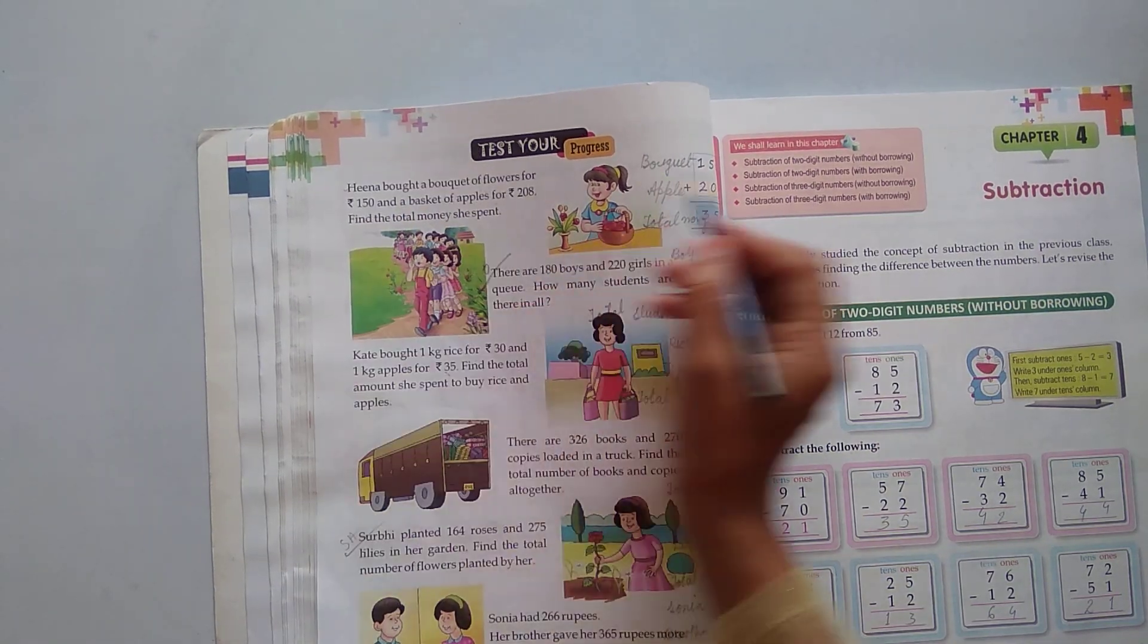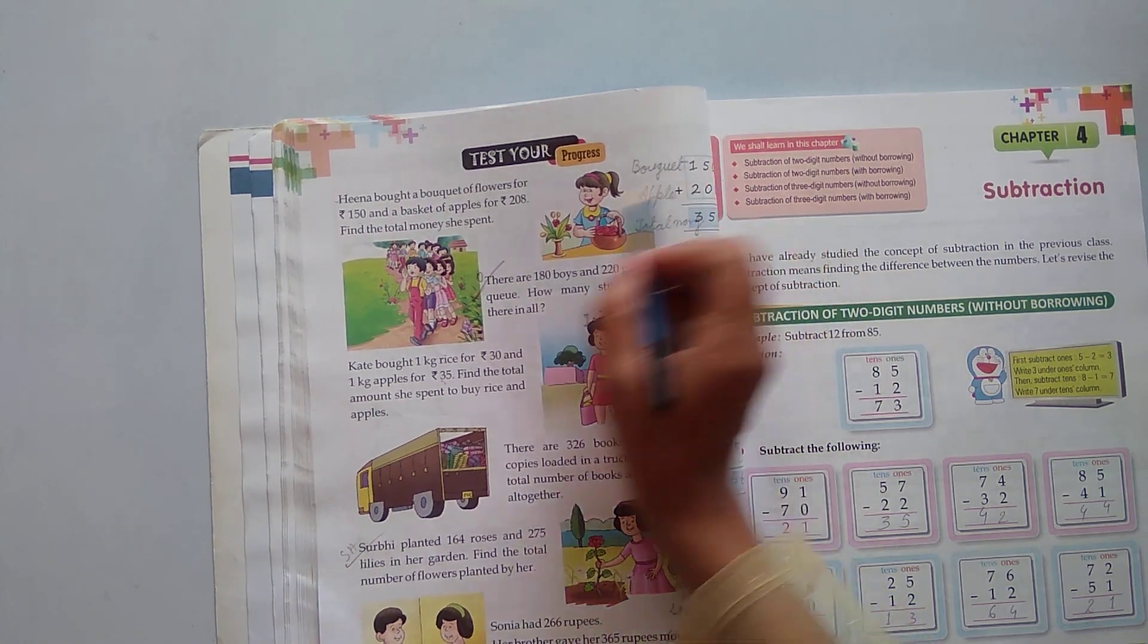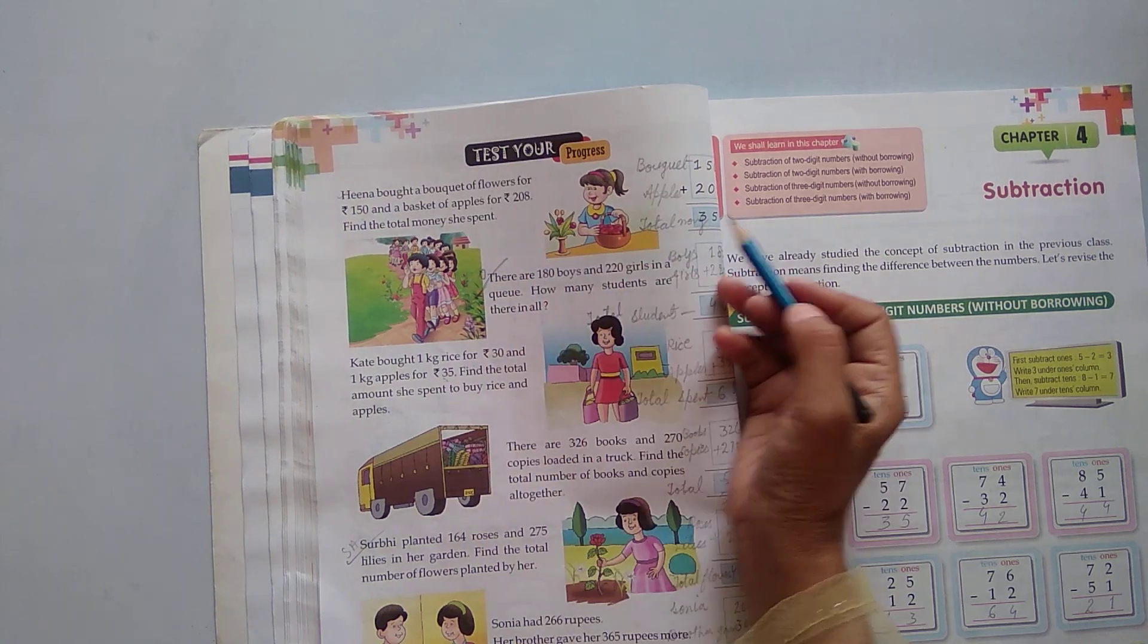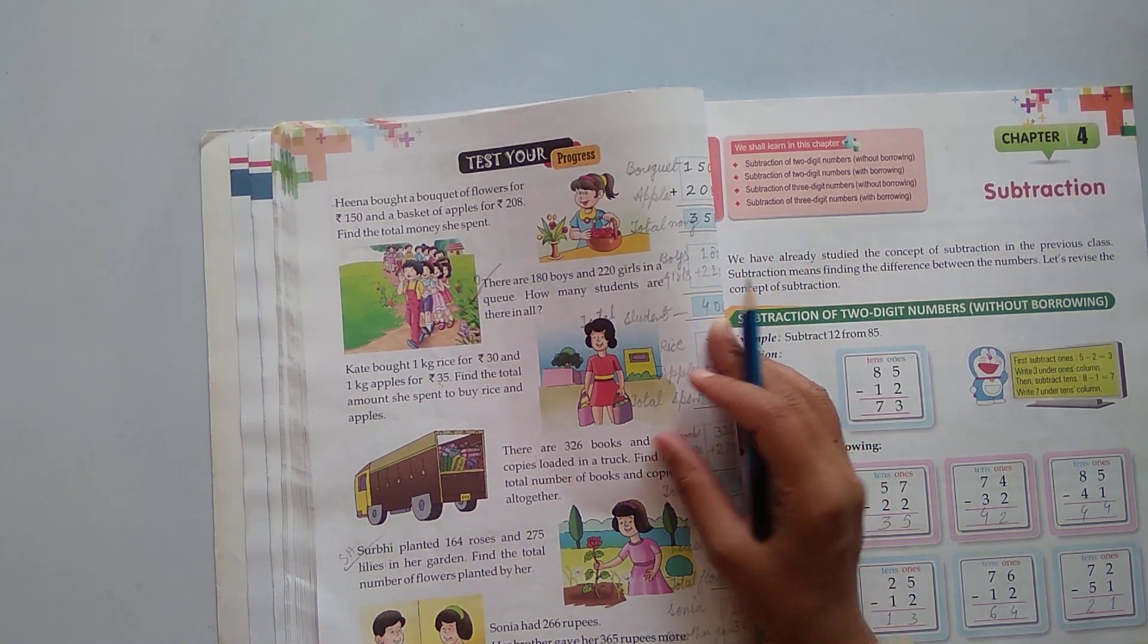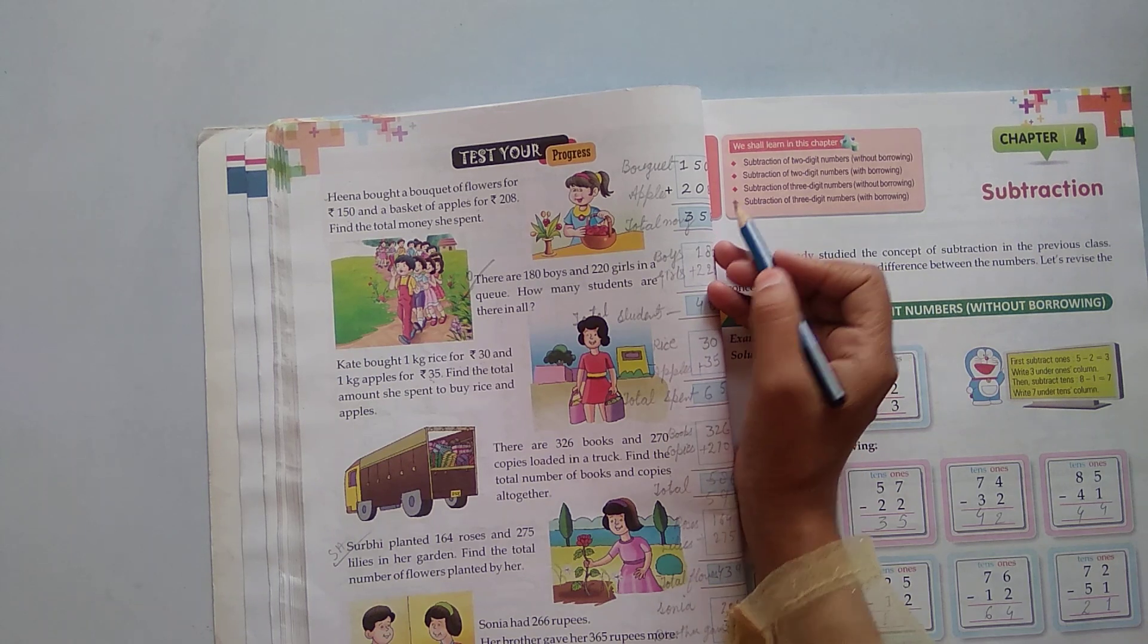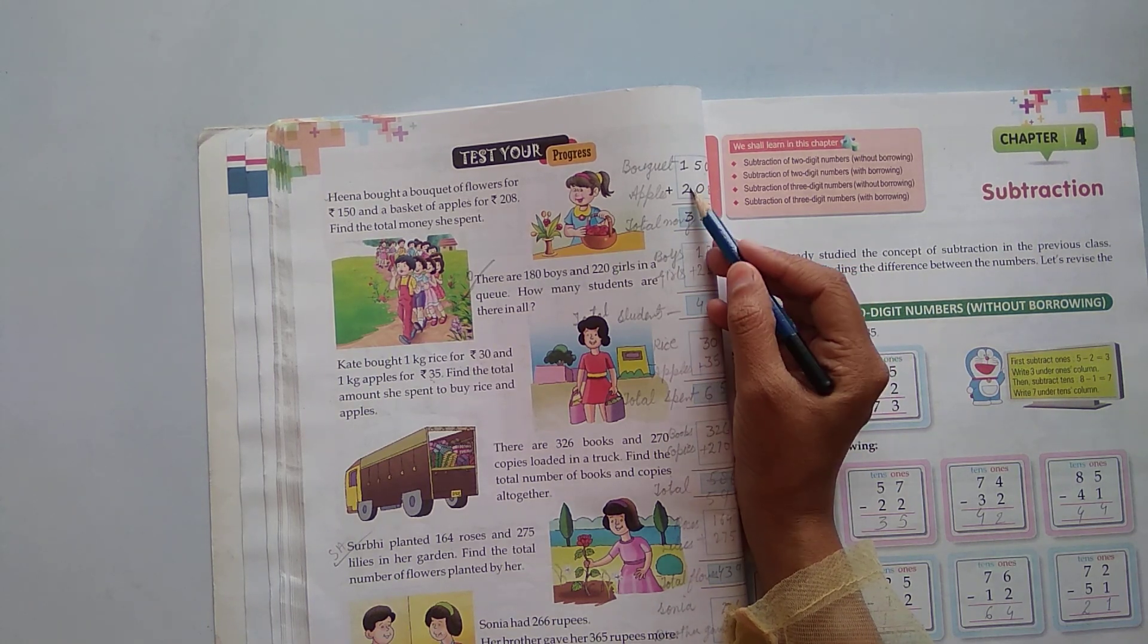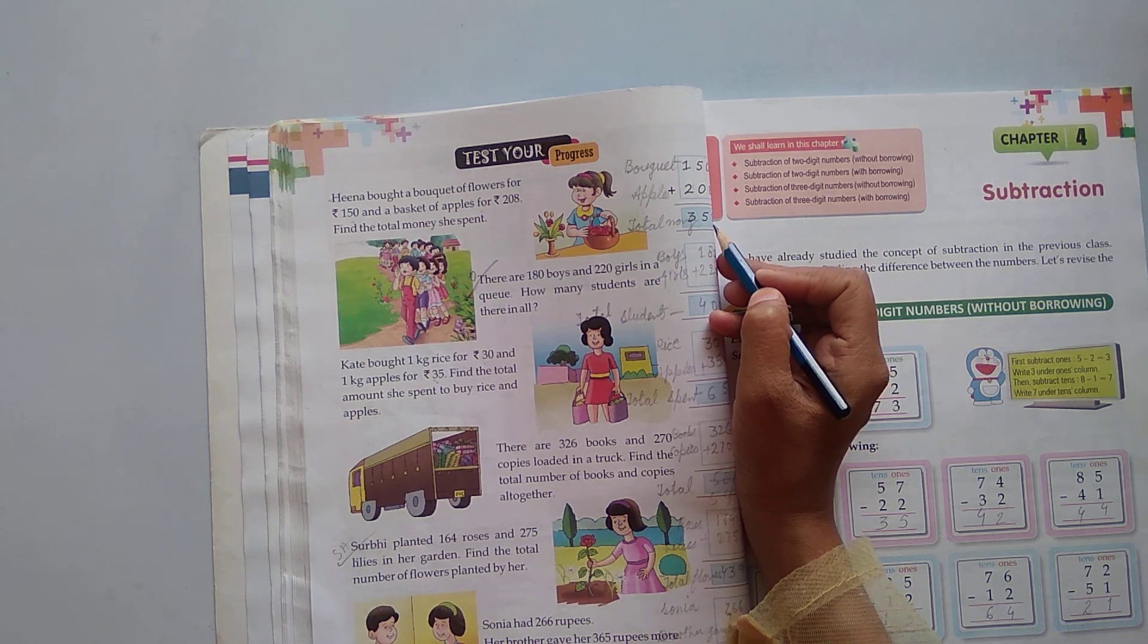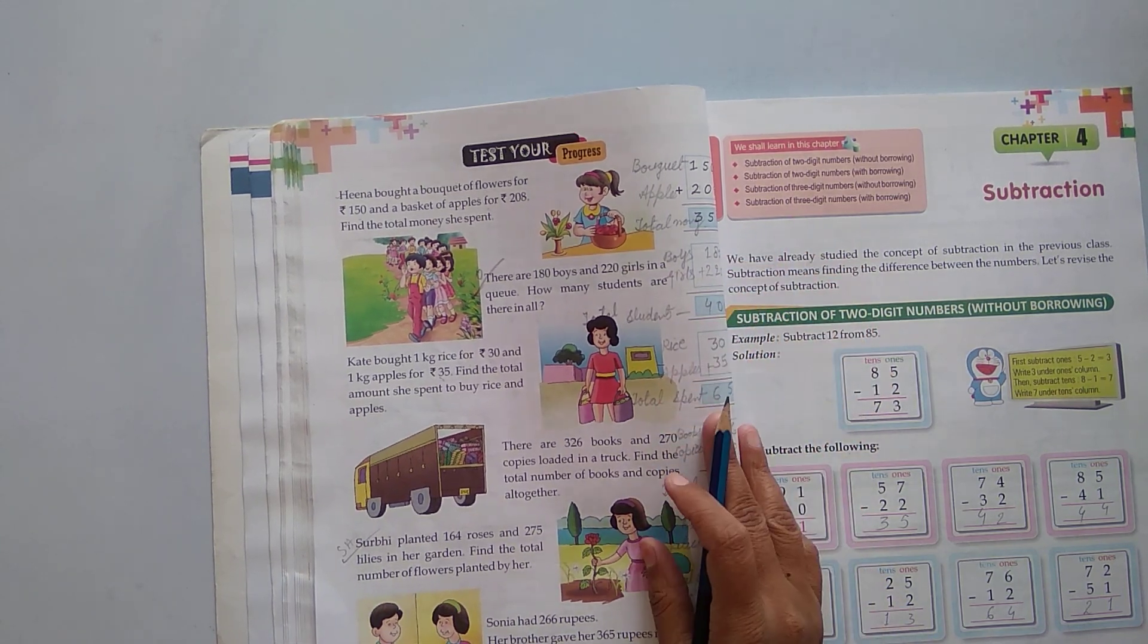There are 158 apples in a basket, and 200 apples are in another basket. So total is how much? Add them: 158 plus 200, it becomes 358. Total is 358.